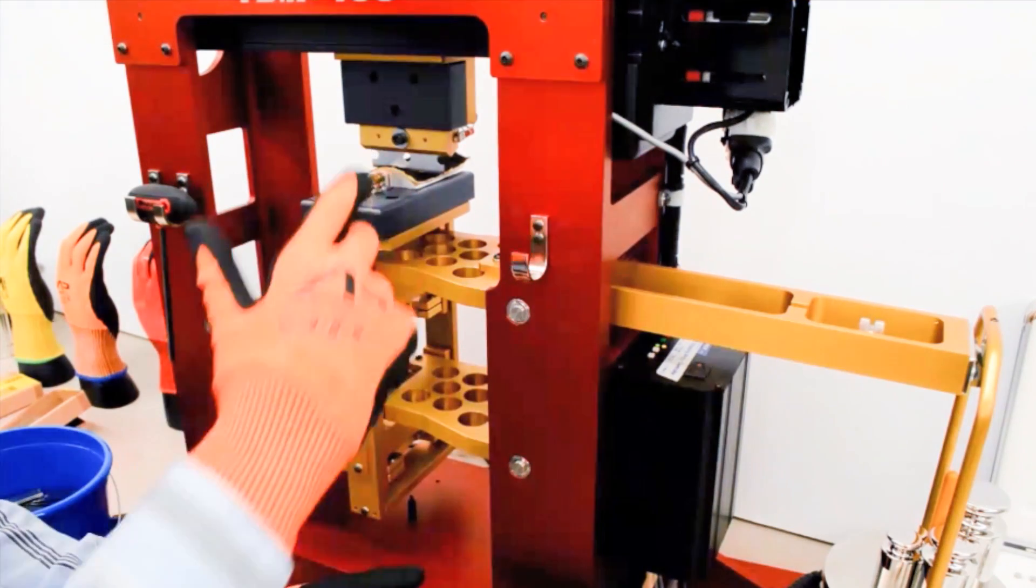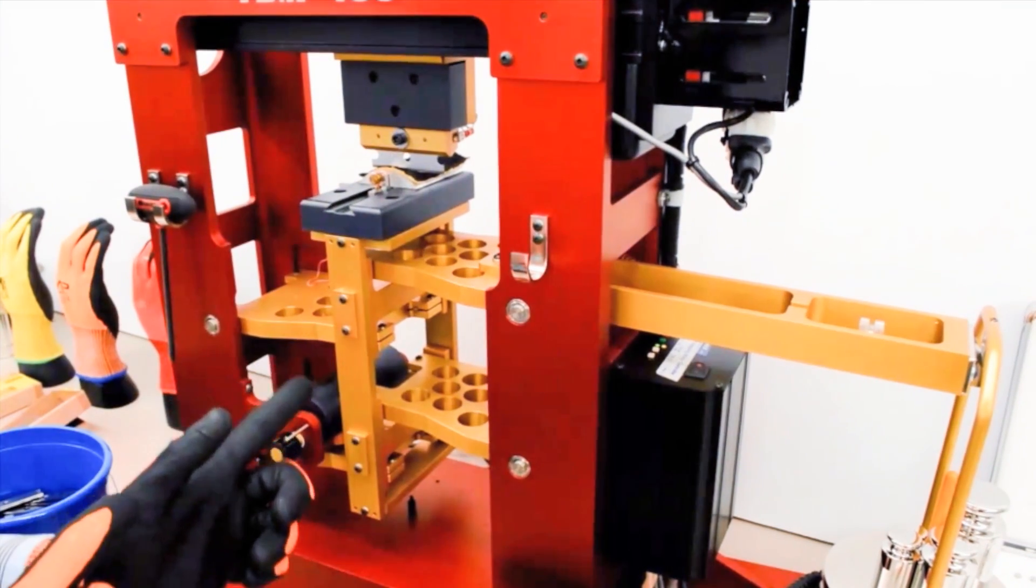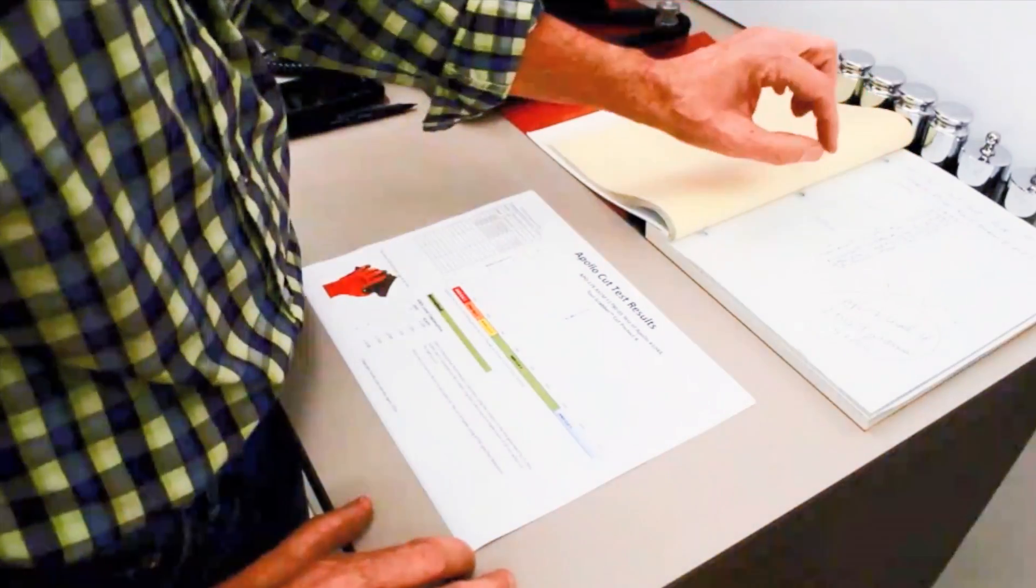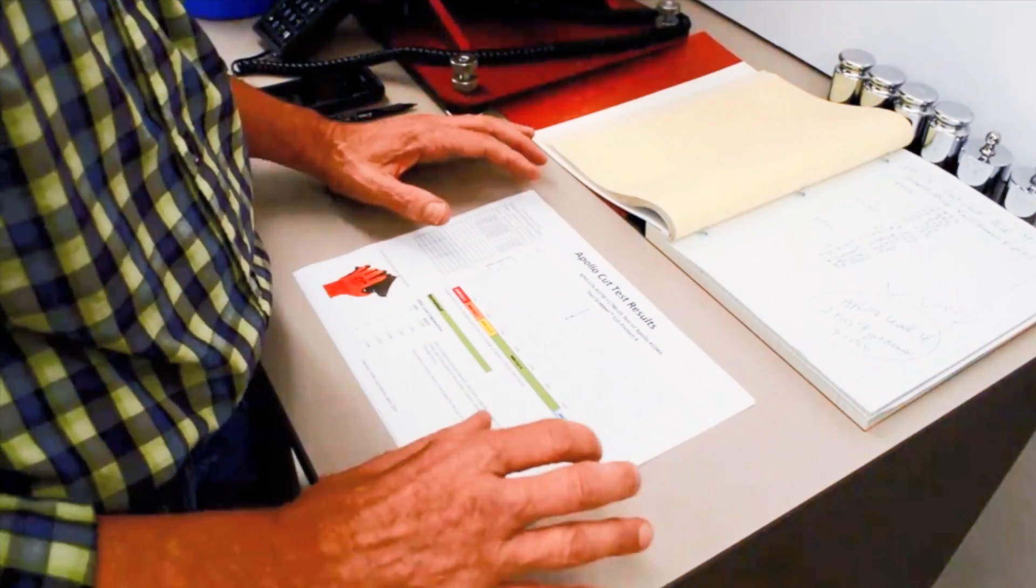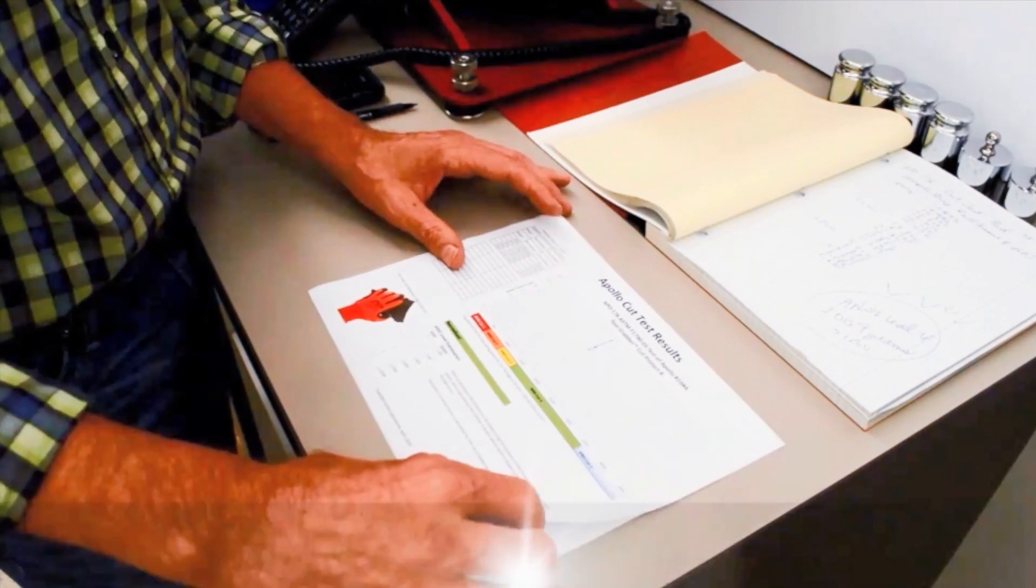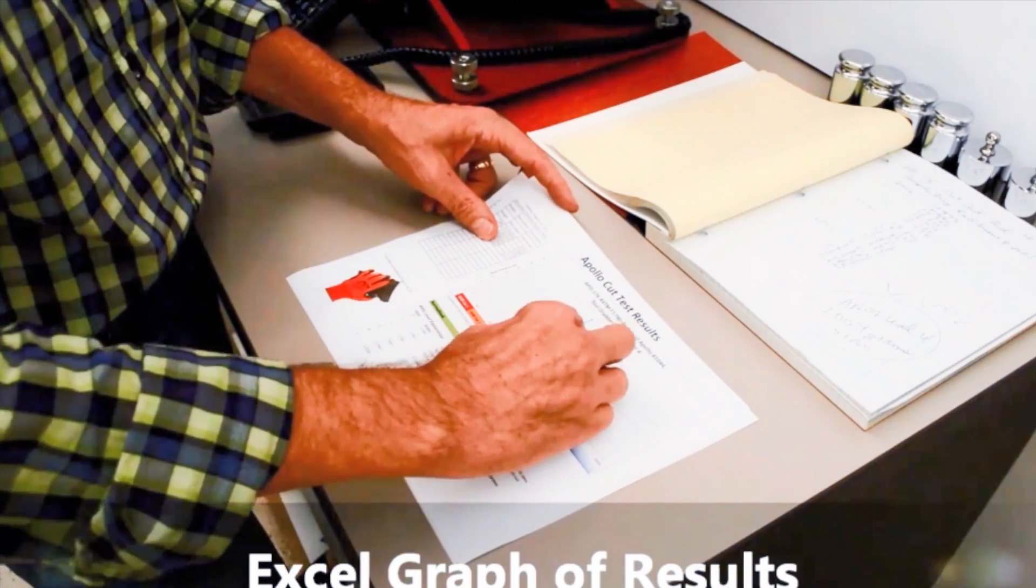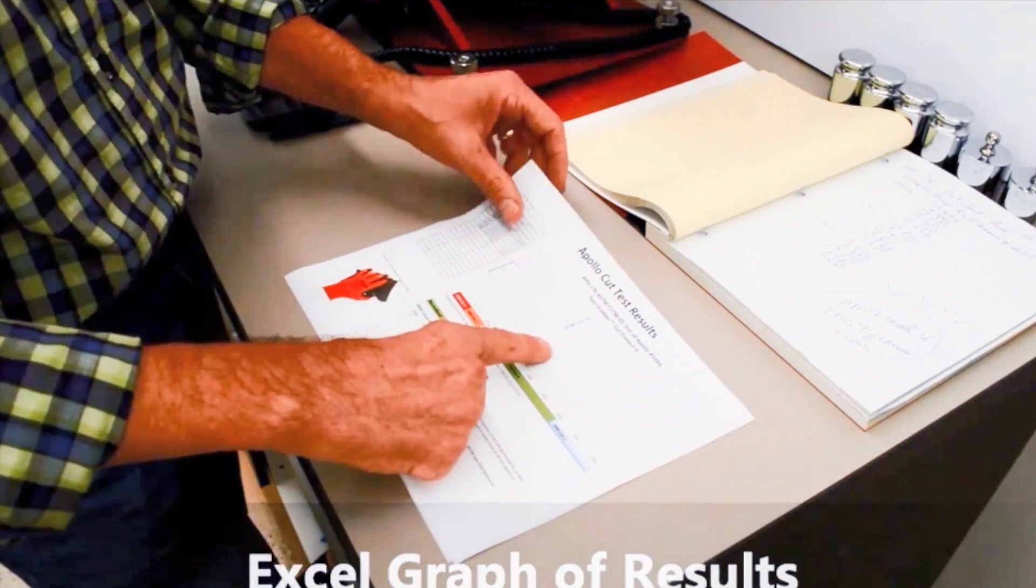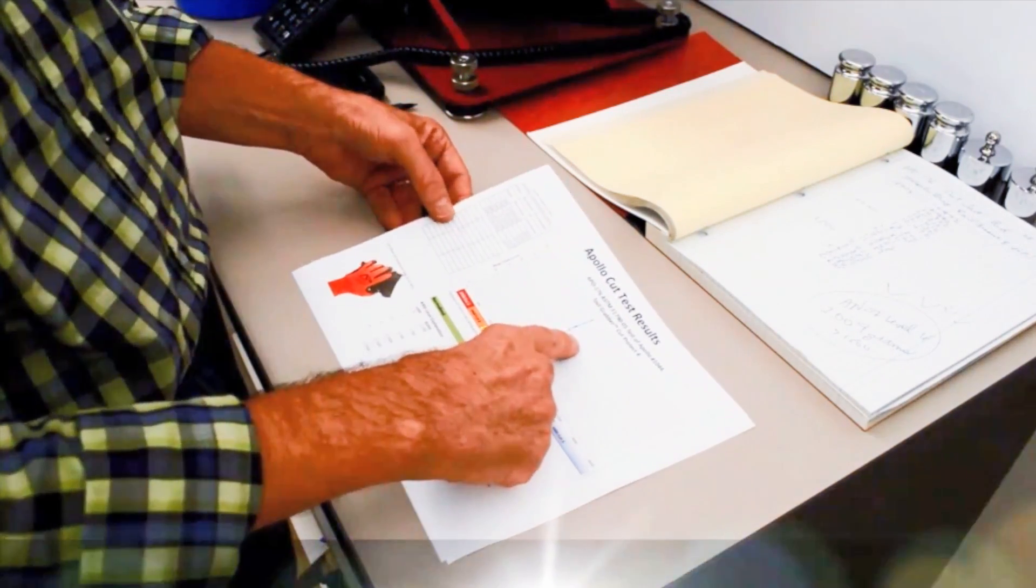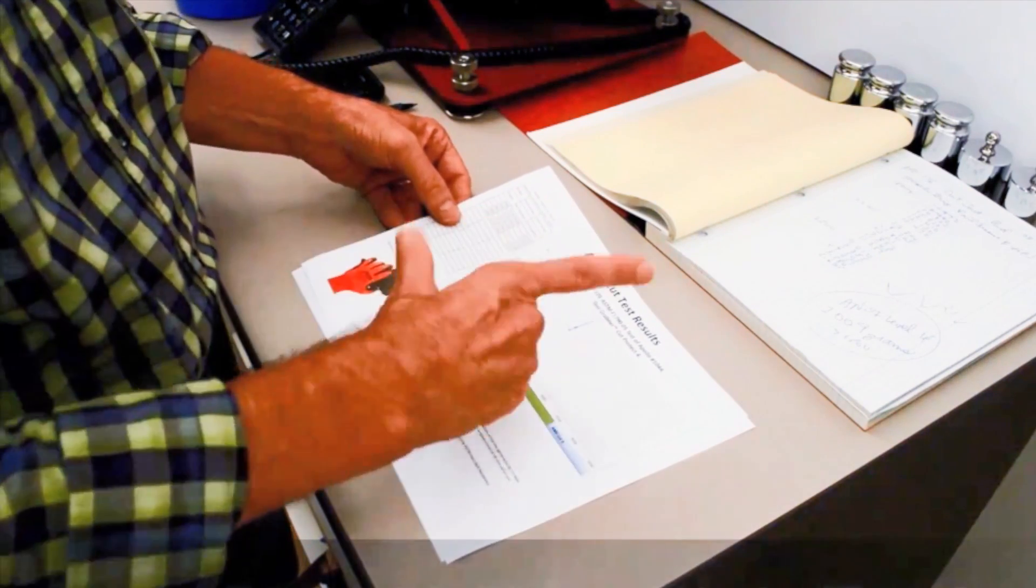So the cut levels are recorded in the lab notebook, and then they're transcribed into an Excel document, and we do the three different levels where this shows the long cuts, which use the lightest weights in our test. This is the first thing we graph into Excel. It has a sharpness correction factor, too.